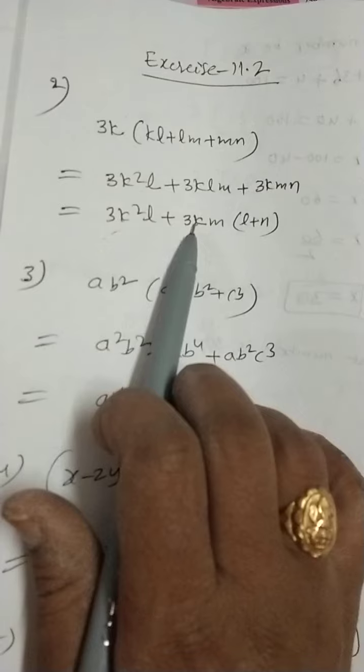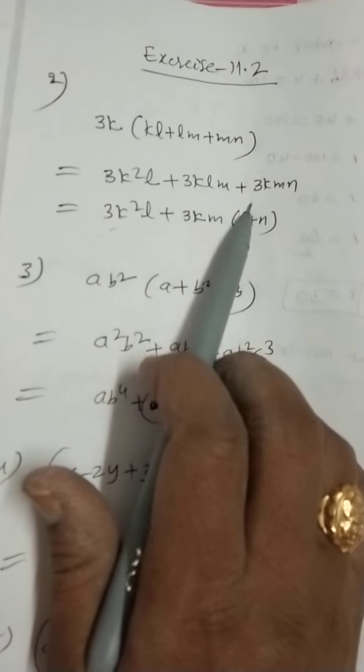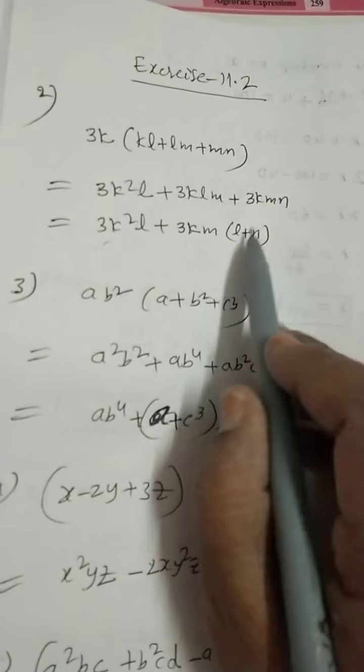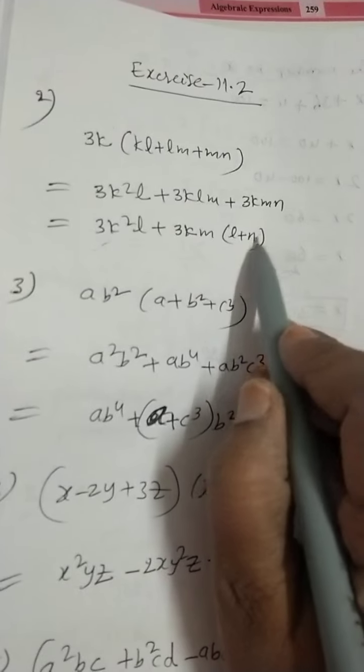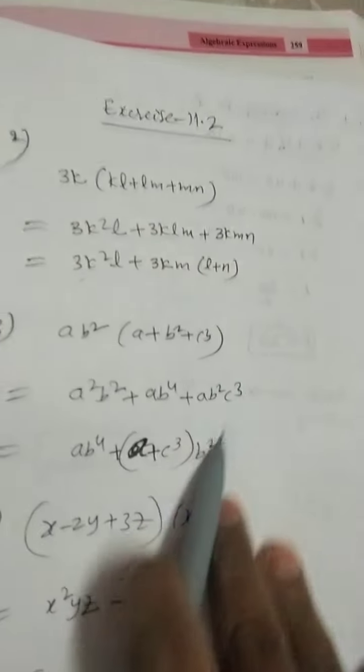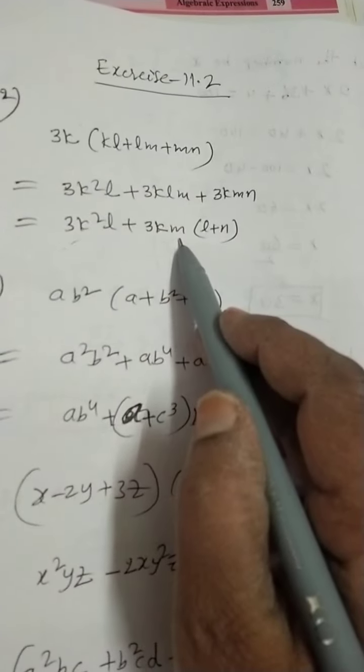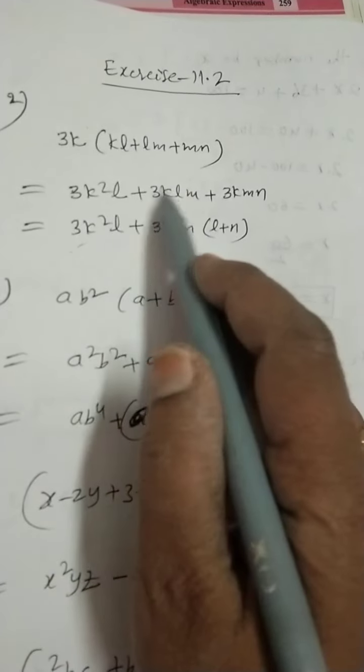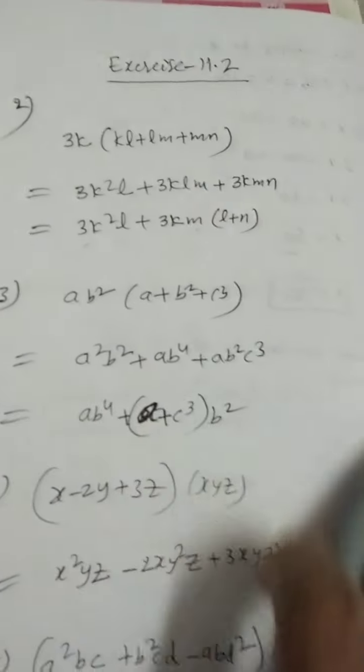So, 3km we take common, remaining is l plus n. Remaining is l. So, if you want to write this step, you can write. Otherwise, up to here, you can write and you can leave it, no problem.